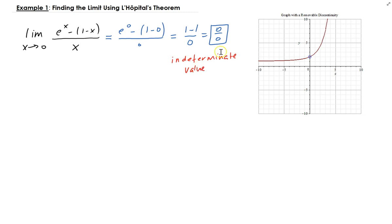There are other indeterminate values, for example, infinity over infinity, 0 to the power 0, infinity minus infinity, and infinity over infinity. So there's different ones, but the more common ones are 0 over 0 and infinity over infinity. You can see those in the notes.